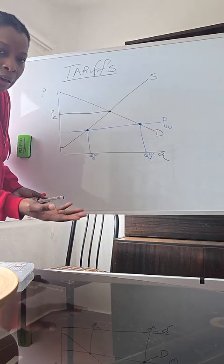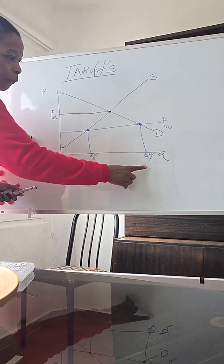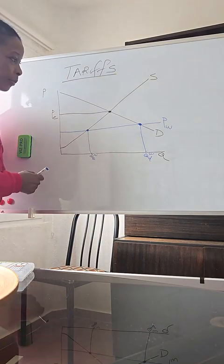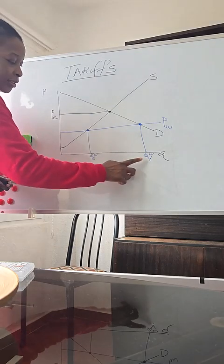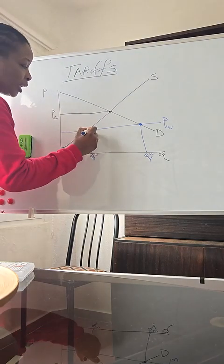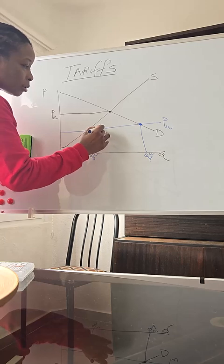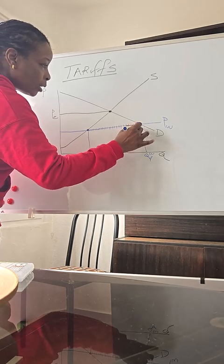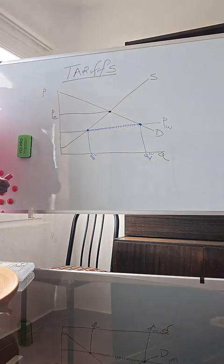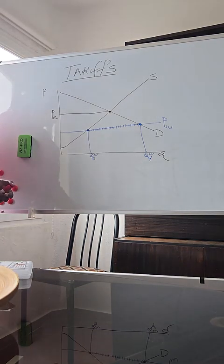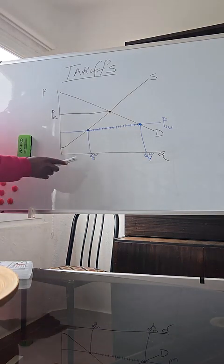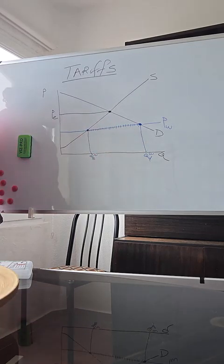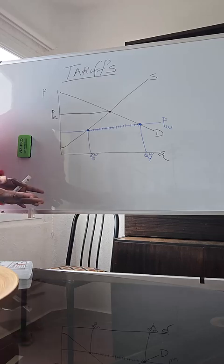So if we are demanding this and the domestic market is only supplying this, how do we get what we want? Well, it's open to trade. Now we can buy on the international market. So if we want this and they only want to give us that, what do we do? We start importing. So if we want this and they're only giving us that, the difference - I'm going to just put a little shade here - this is what we start to import. We want it, it's cheaper on the global market and they're only willing to give us this, but we want this.